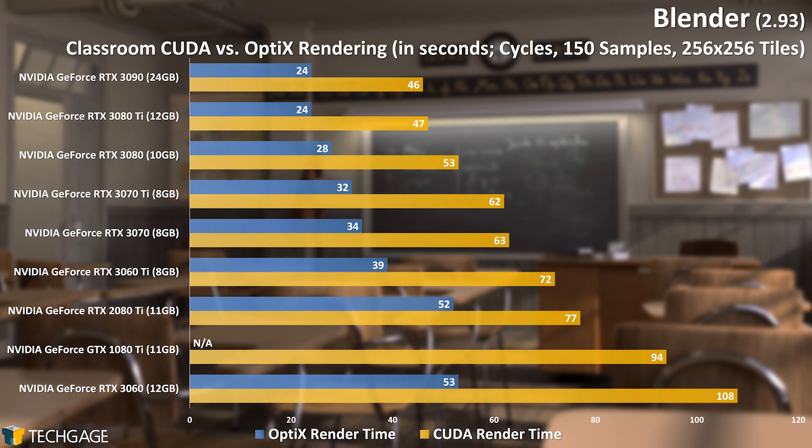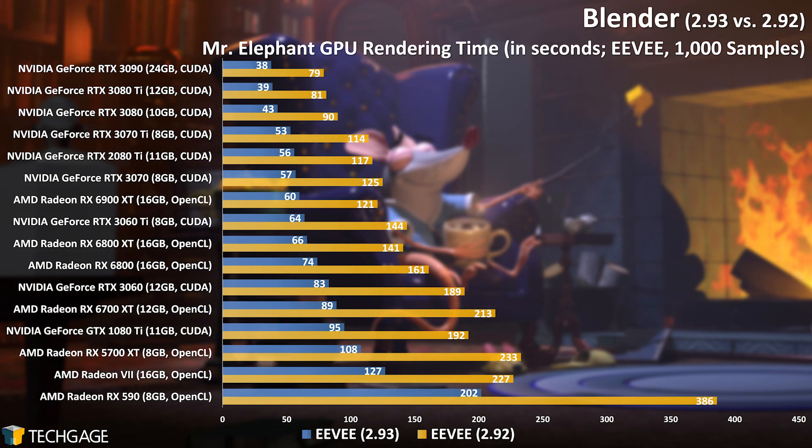Luckily for AMD, the Eevee render engine can't take advantage of ray tracing acceleration like Cycles can, so let's see how that can shake things up. Blender 2.93's release came with the promises of improved Eevee features and performance, but we didn't expect to see enormous gains like these when compiling the results. We originally didn't even plan on having 2.92 Eevee results in here, but once we understood the actual gains, we reinstalled each GPU again to test the previous version with the current graphics drivers. One of the best parts about this improved performance is that quality hasn't gone down — rather, it's actually gotten better. You yourself can give this a shot with any Eevee project; simply render it the same way in 2.92 and 2.93, and you should see slightly better results with the latter. Both AMD and NVIDIA have gained handsomely here.